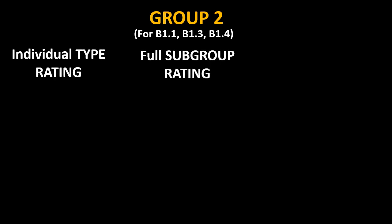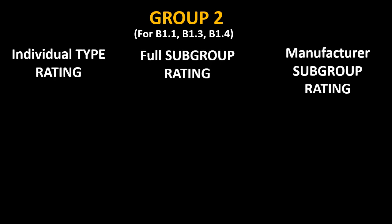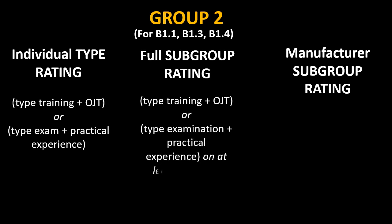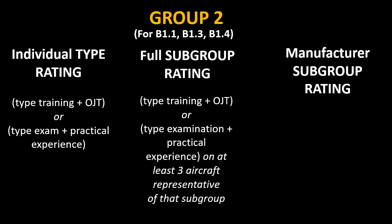If the aircraft falls in Group 2, then for category B1 you can either have individual type rating, full subgroup rating, or manufacturer subgroup rating. For individual type rating, you can either do type training plus OJT, or type exam plus practical experience. For subgroup rating, you can either do type training plus OJT, or type examination plus practical experience on at least three aircraft representative of that subgroup.